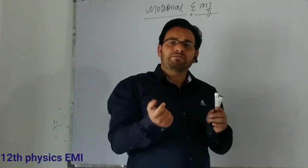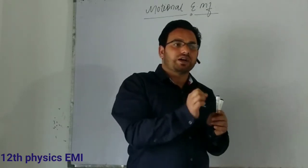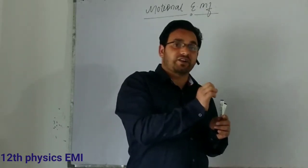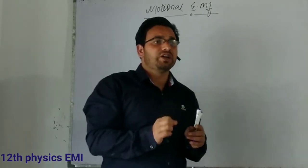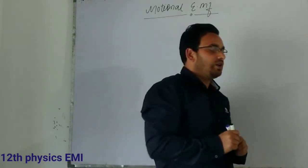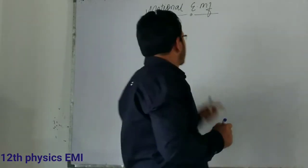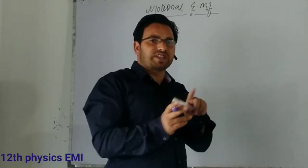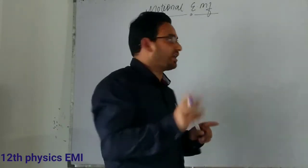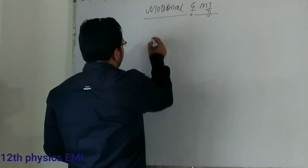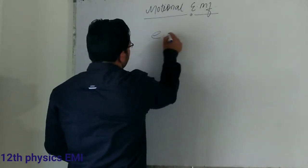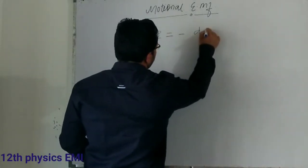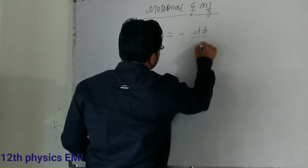The magnitude of EMF is given by Faraday's second law. Today we are going to discuss about EMF. From the second law of Faraday, we have the formula: E = −dΦ/dt.